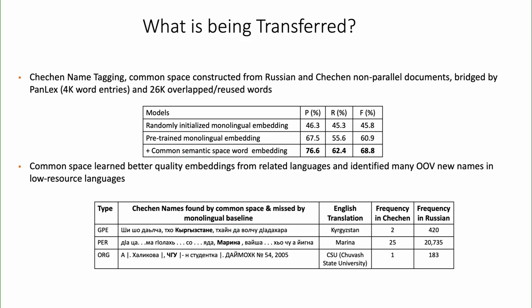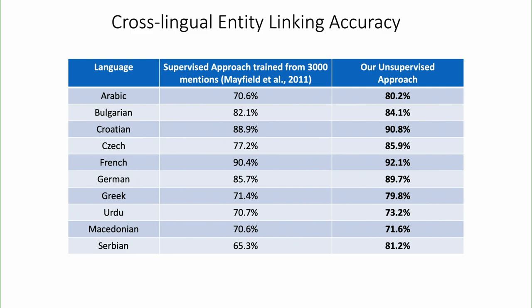We looked into the results to see what is being transferred. For example, a university called CSU, very popular in Russia, appears only once in Chechen data but 183 times in Russian. This indicates that if you can leverage topic-related data in a higher-resource language, you can use that for the low-resource language. We're very happy about entity extraction results. The cool thing is you can now apply this to cross-lingual entity linking in an unsupervised fashion, because all mentions in any language are aligned with English entities in the common space — you just compute cosine similarity to get entity candidates.